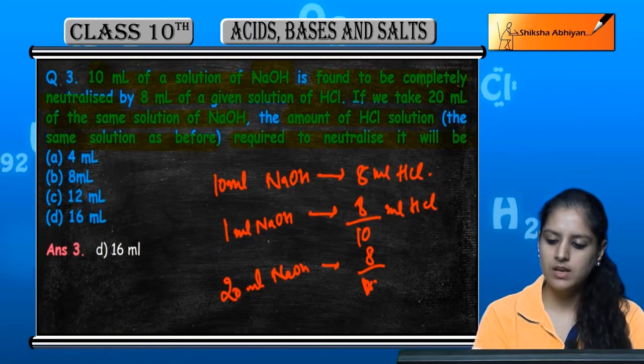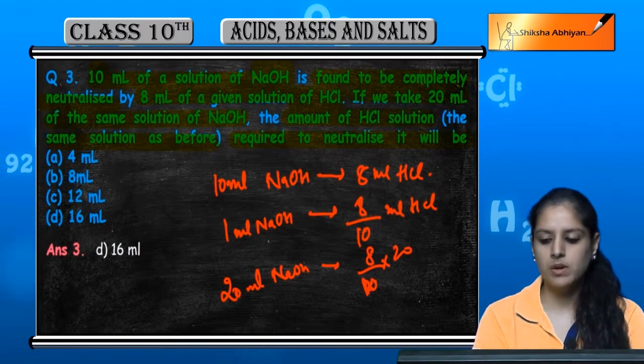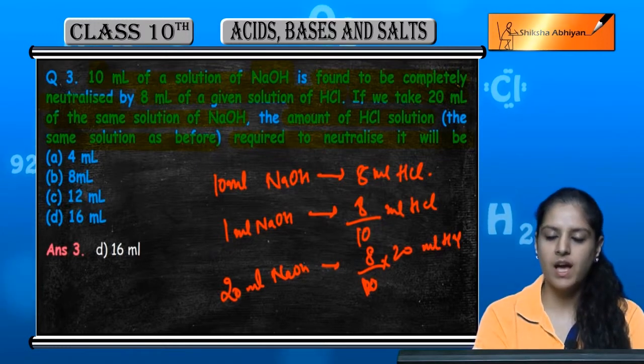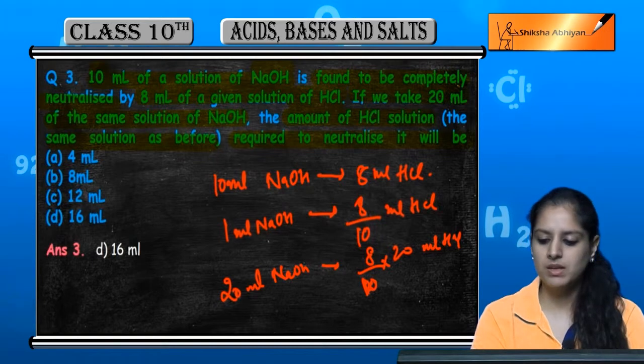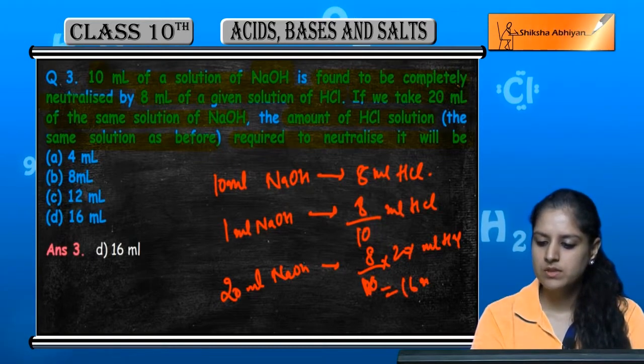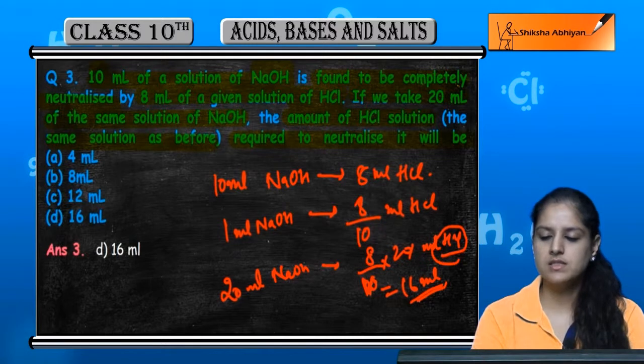That will be 8 upon 10 multiplied by 20 ml of HCl. I am simply using unitary method. By solving, we get 16 ml of HCl.